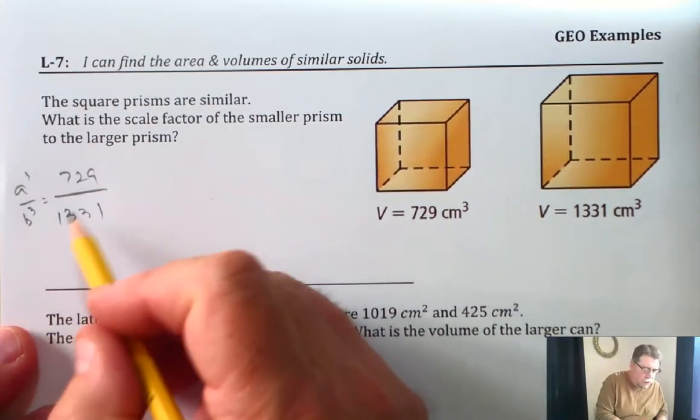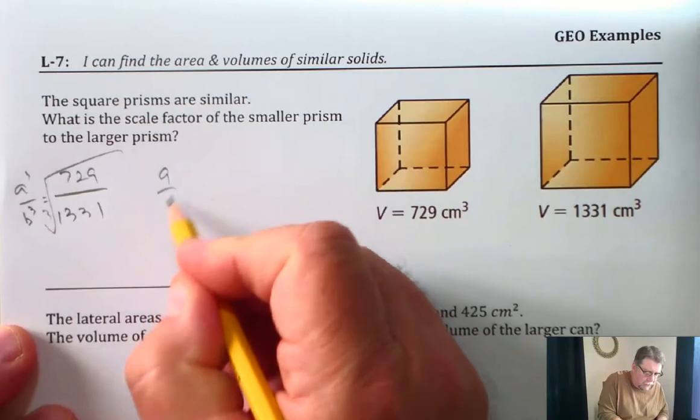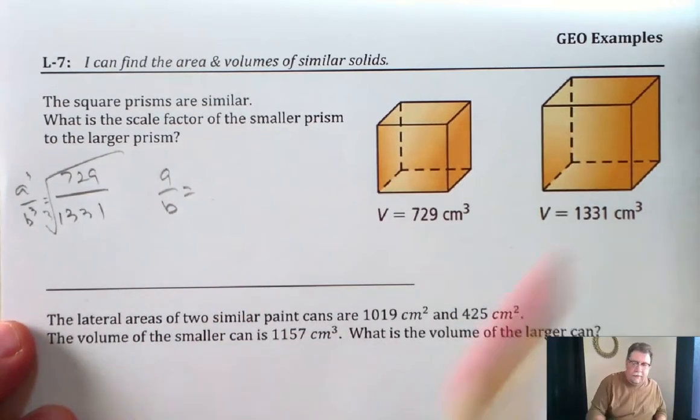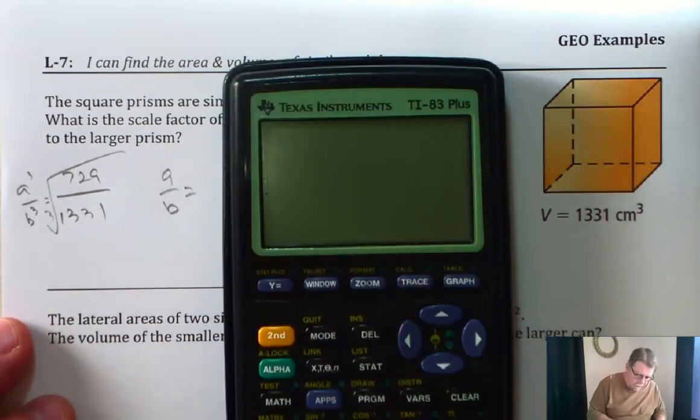So what we need to do is take the cubed root of this to find a over b. So the cubed root of 729, let's find out what that is.